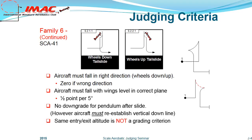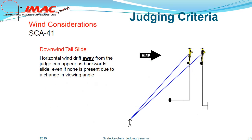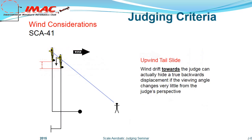Entry and exit altitudes are not graded and may be different. Judges need to take the wind drift into account when observing the aircraft's backward movement during the slide. If the wind causes the aircraft to drift away from the judge's viewpoint, the aircraft will appear to be sliding backward because of the change in the angle at which the aircraft is viewed. Consider also a tail slide executed with the aircraft drifting toward the judges — in this case, the aircraft may appear to have no backward slide and may even appear to climb slightly. Judges need to take these factors into account and, of course, the competitor is given the benefit of the doubt.